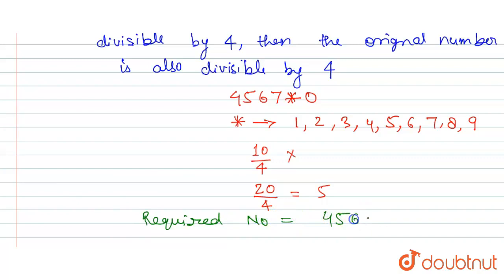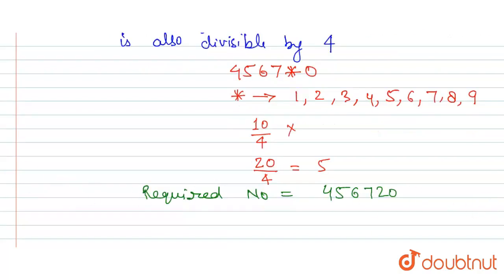456720. This is the smallest number, and finally, 456720 is divisible by 4. This is the answer for this question.